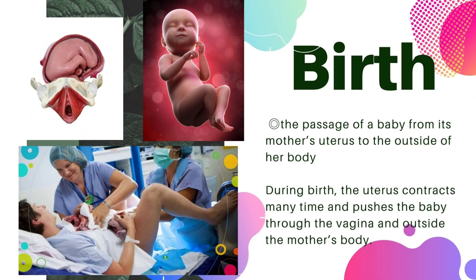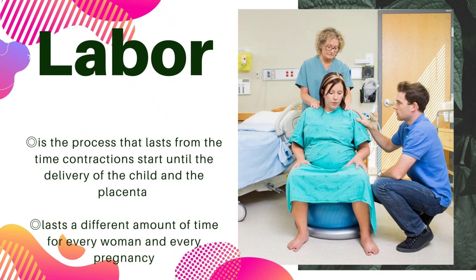Birth is the passage of a baby from its mother's uterus to the outside of her body. During birth, the uterus contracts many times and pushes the baby through the vagina and outside the mother's body. Labor is the process that lasts from the time contractions start until the delivery of the child and the placenta. Labor lasts a different amount of time for every woman and every pregnancy.